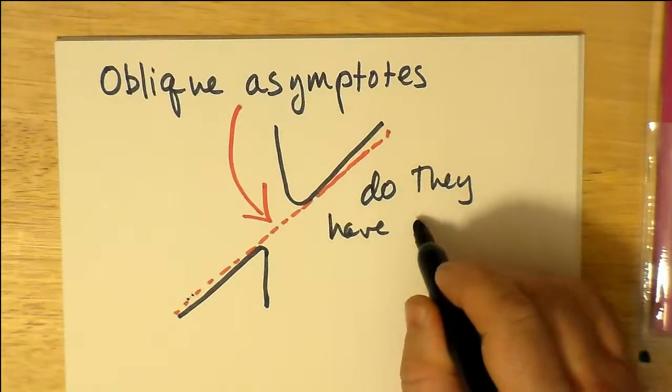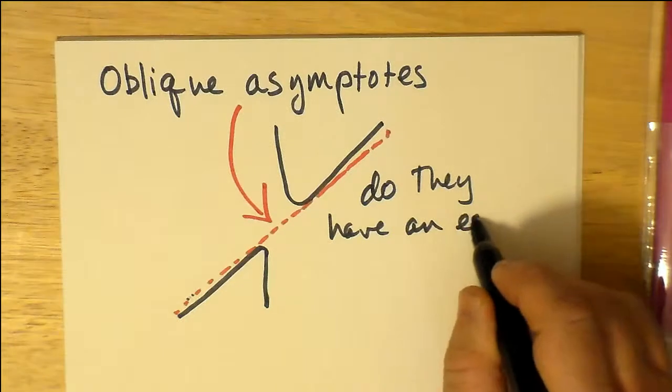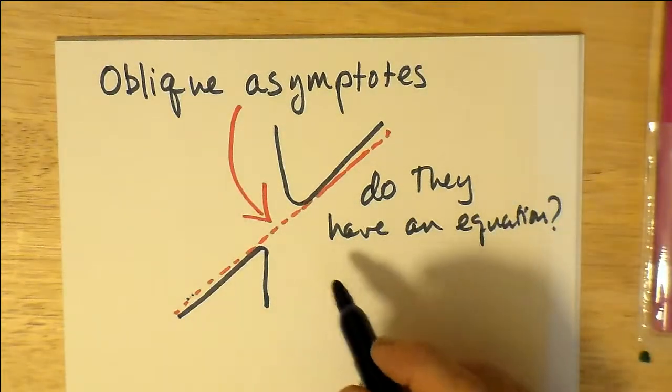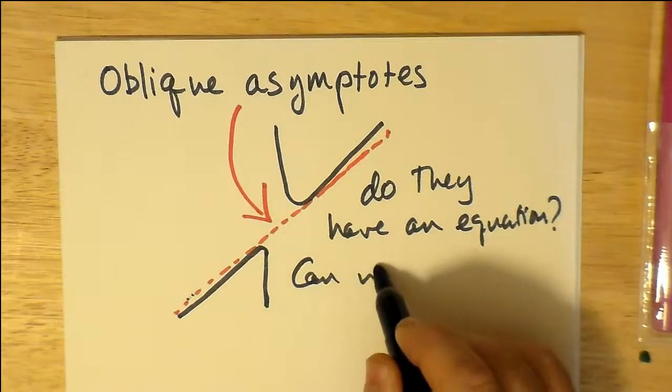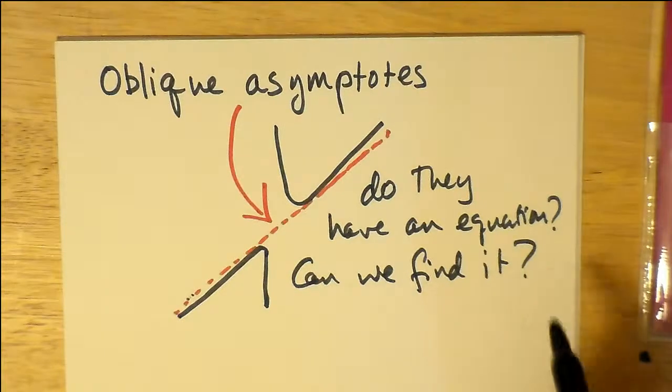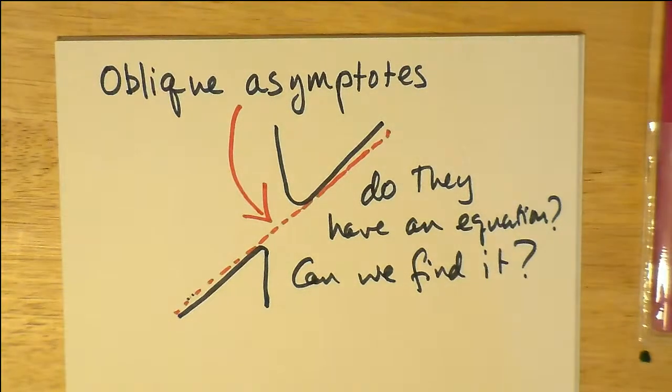Now, it's curious to know if they actually have an equation. If it is a line, it must have an equation. And can we actually find out what that equation is? And through the techniques of long division, yes, we can.